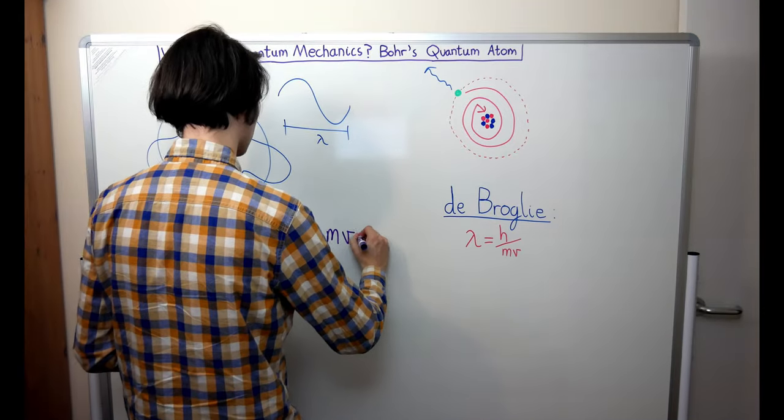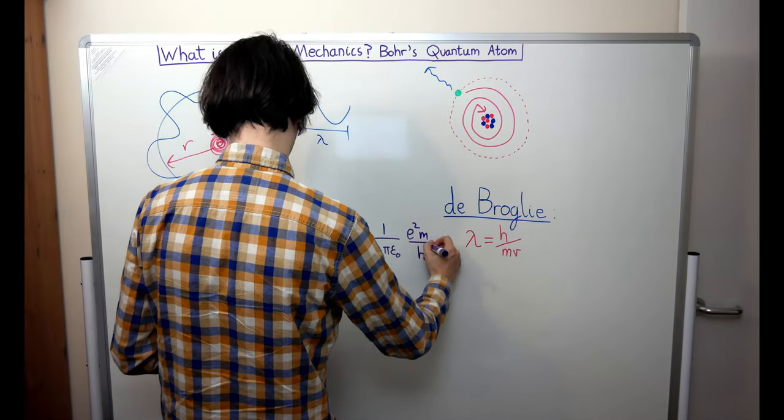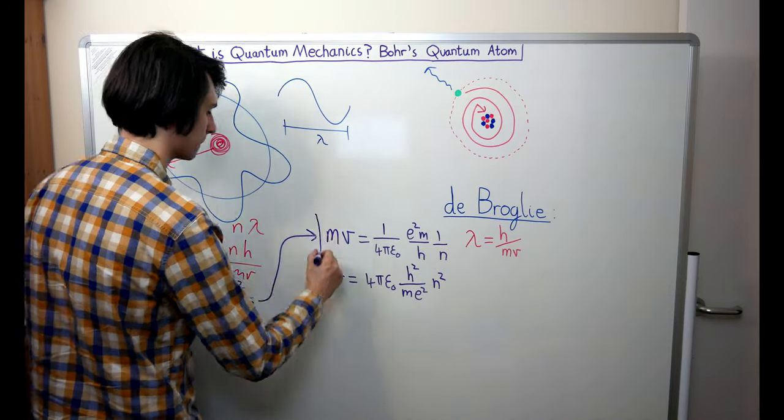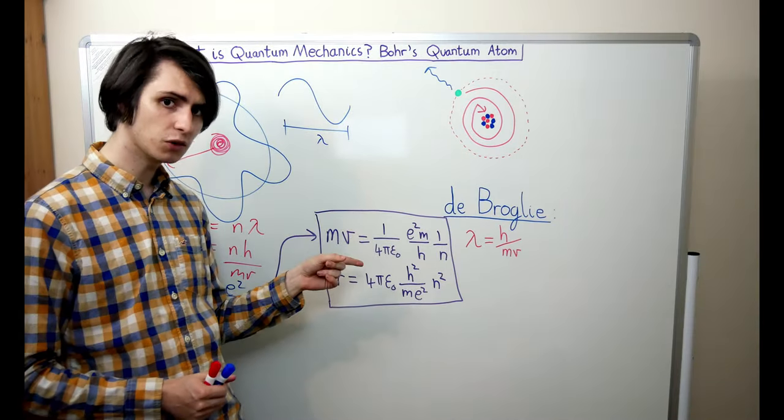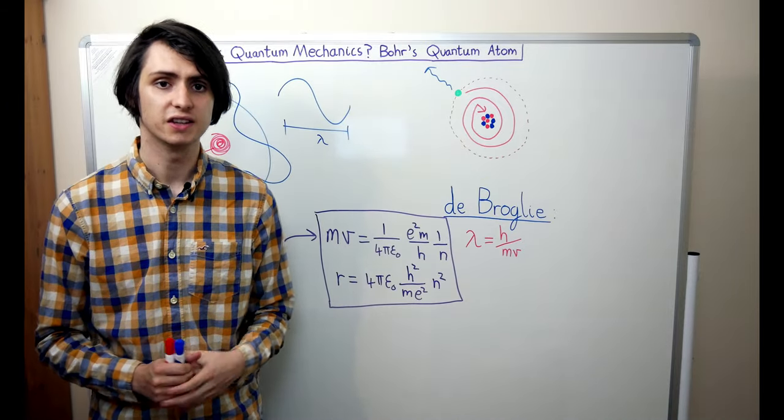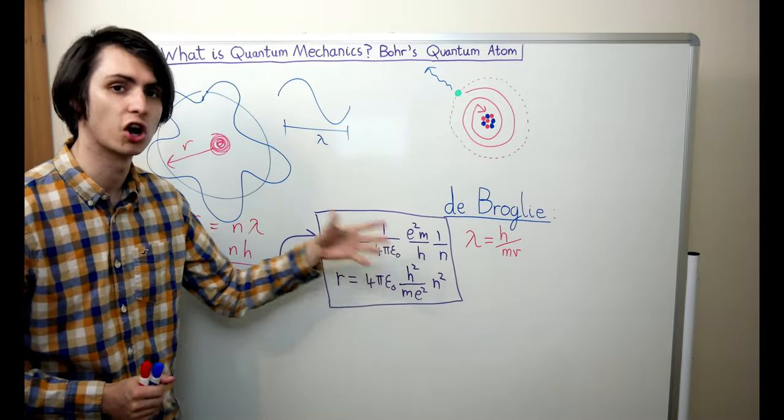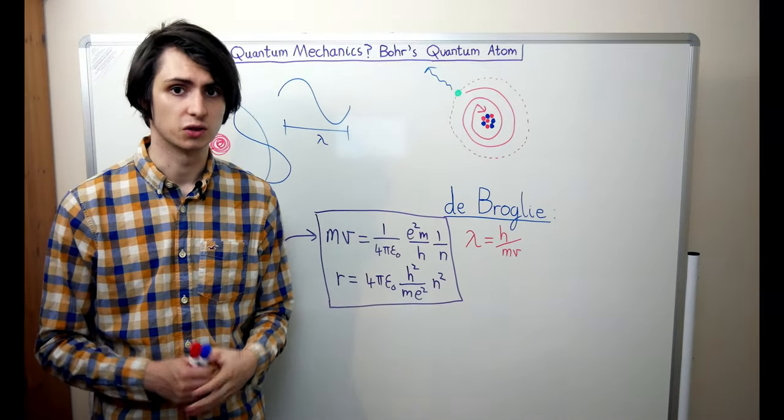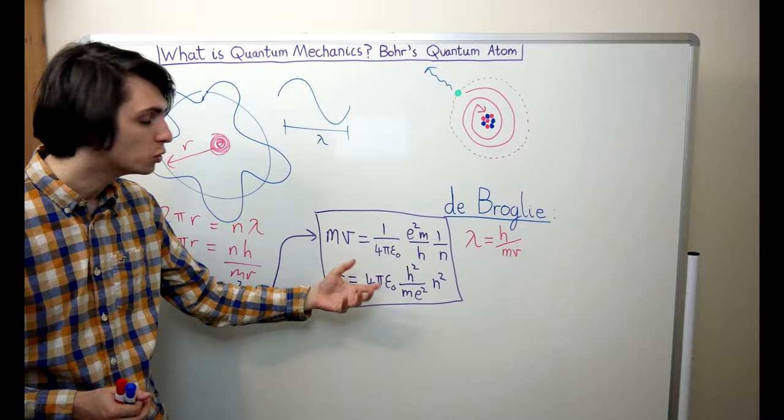Using a bit of algebra, we can combine the red relation and the blue relation to obtain expressions for the momentum and for the radius separately. It's here that we see one of the central tenets of quantum mechanics come to light. This n here is a positive integer only, and it's the only thing that we can vary in these equations. The rest of these letters and numbers are all just constants.